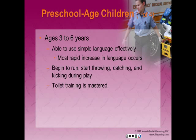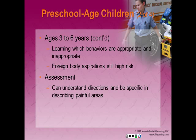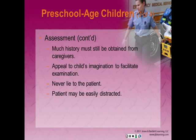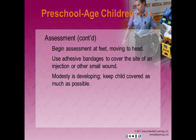Preschool-aged children are from three to six years. This is the age of the most rapid increase in language. Children begin to run, throw, catch, and kick during play. Toilet training is usually mastered, and they learn which behaviors are appropriate. Foreign body aspiration continues to be a high risk. For assessment, children can understand directions and describe painful areas, though much of the history must still be obtained from caregivers. Appeal to the child's imagination. Do not lie to a patient of this age — it is very hard to regain lost trust. Begin your assessment at the feet and move toward the head. Modesty is developing, so keep the child covered as much as possible.